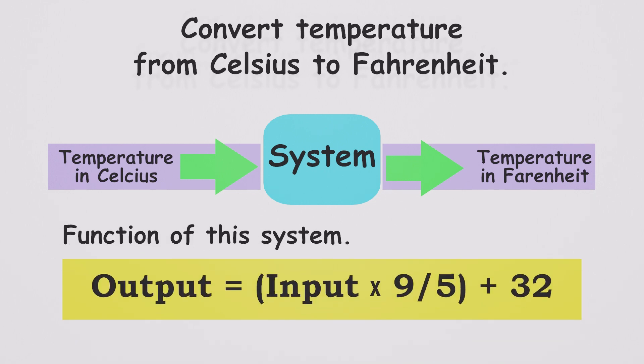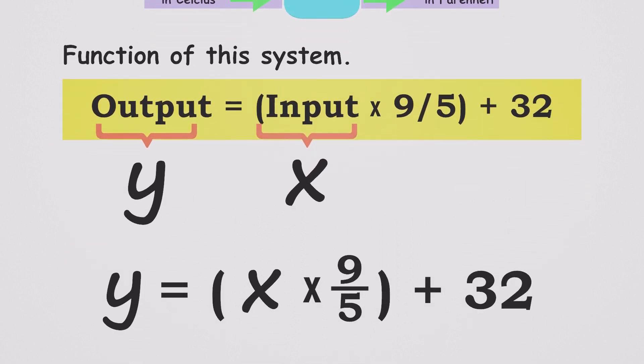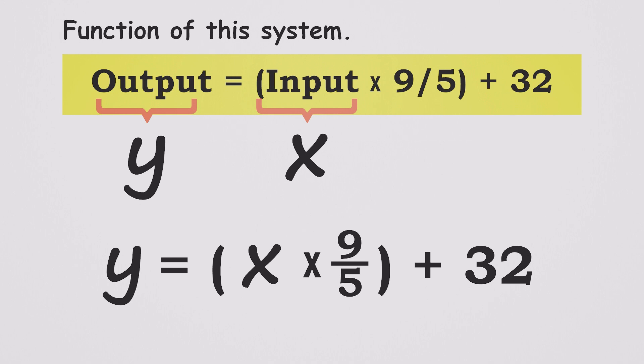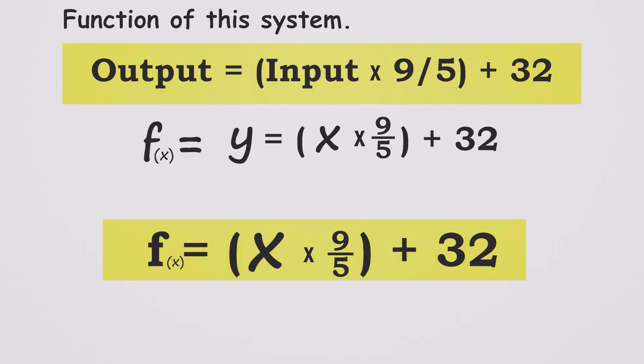In mathematics, we normally use the letter X to represent inputs and letter Y to represent output. Sometimes we name the functions using different notations. This is called the basic notation for a function.